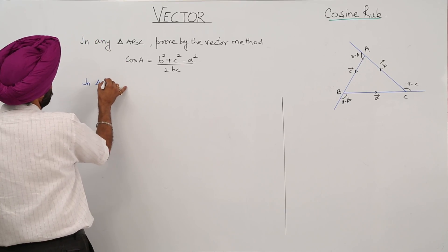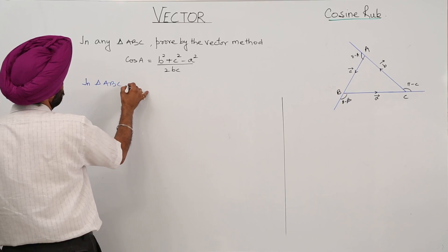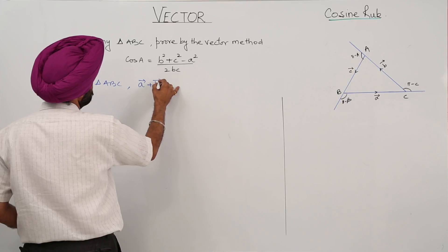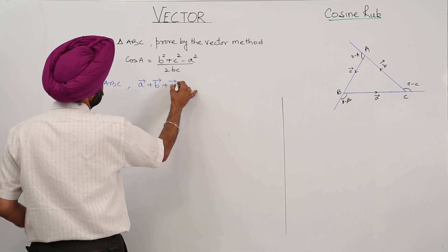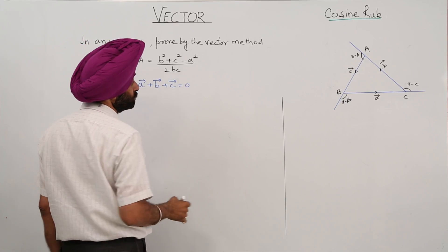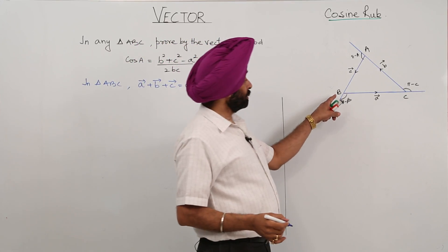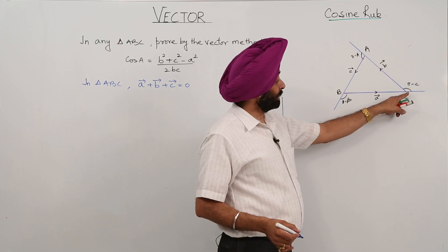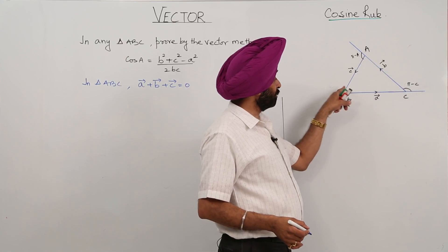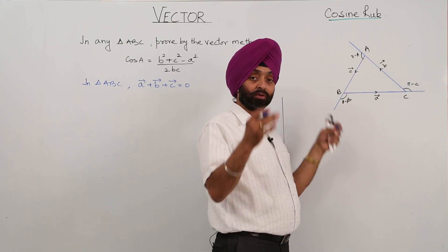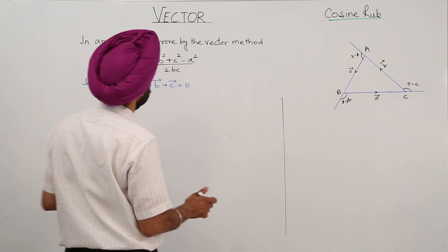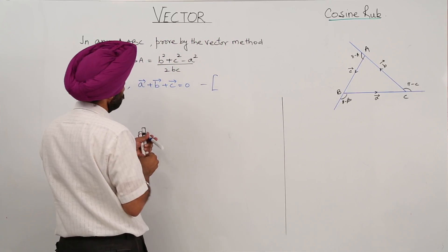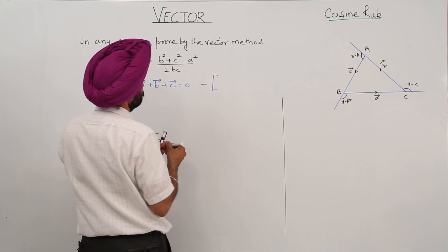In triangle ABC, vector A plus vector B plus vector C is equal to 0, because the initial point and terminal points coincide — initial, terminal, then initial, terminal, and here again initial and terminal coincide. So this becomes the triangle law.